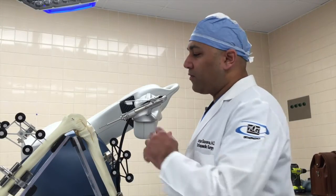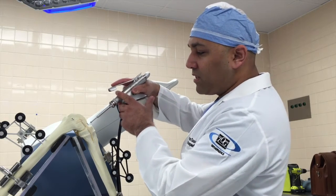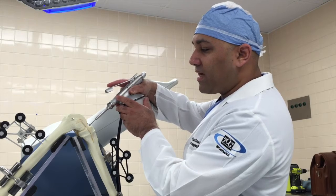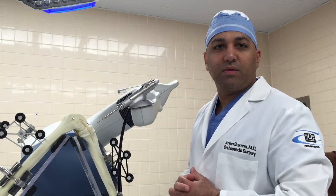Once these trackers are placed, the computer allows the surgeon to use the robotic arm with this small bar to resect bone from the tibia and femur, allowing for the components to be positioned.